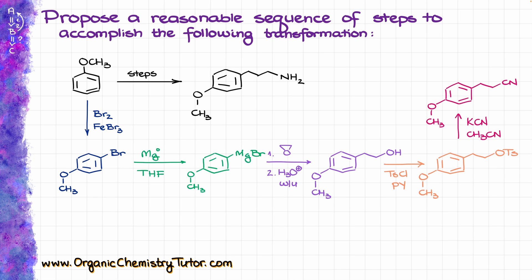As my nucleophile, I am going to use potassium cyanide. I will also use an appropriate acetonitrile solvent here, which is the typical polar aprotic solvent we find in SN2 reactions, and that is going to give me my nitrile.